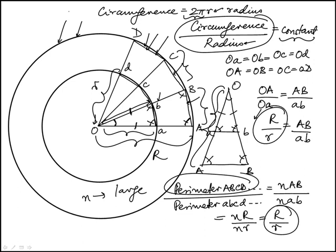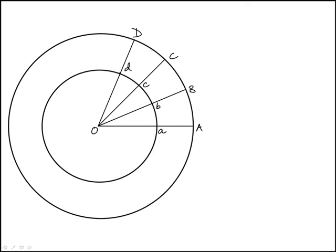And same thing with the denominator. That would become identical to the circumference of the inside circle. So what we have here is that the circumference of the larger circle over circumference of the smaller circle would become equal to the ratio of their corresponding radius. And that's basically the key result.